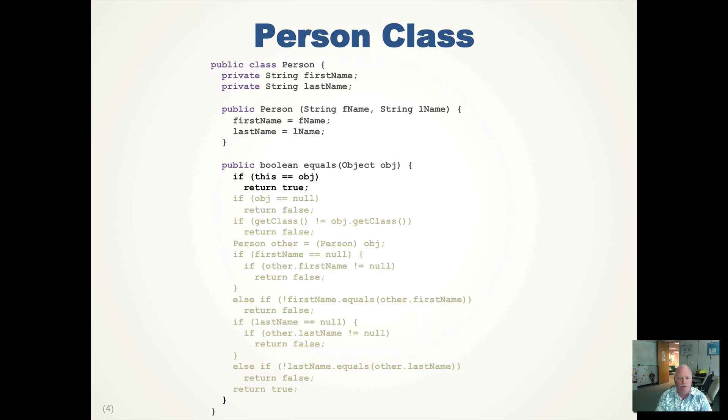The first step is we check to see if the references are pointing to the same object. So if this is pointing to object as in they have the exact same references, we return true. The next step is we check to see if obj is null. We know that this is not null because we had to call equals on it. So if object is null, then we know that this cannot be null, so we return false.